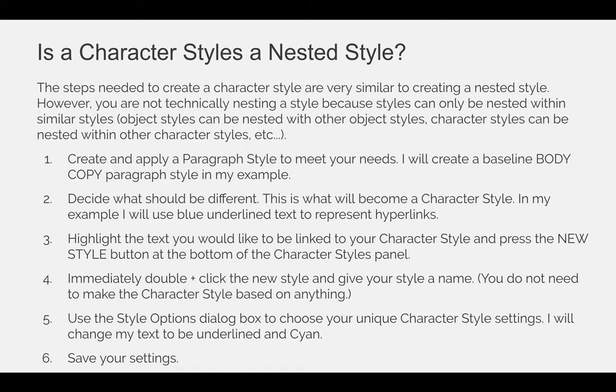So the steps we're going to follow are: create and apply a paragraph style to meet your needs. I'm going to use body copy as an example, so I will create a baseline body copy paragraph style that will be the formatting for all of the paragraphs of text in my document. I then need to decide what should be different. I'm going to create a character style for hyperlinks — I'm creating a digital document and I want hyperlinks to be blue and underlined.